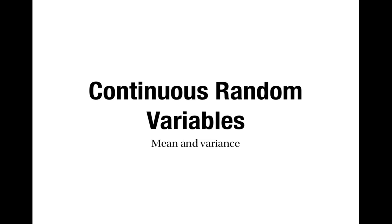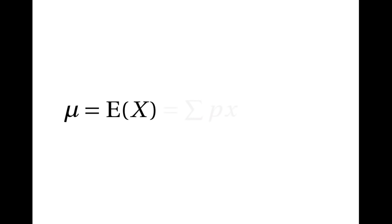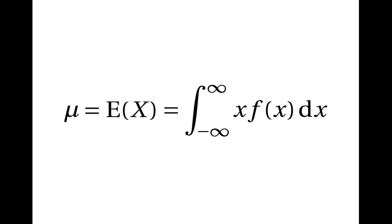This is a video about finding the mean and variance of a continuous random variable. The mean is the same as the expected value of the random variable. For a discrete random variable, that's equal to the sum of the probabilities times the possible values. For a continuous random variable, we replace the sum with an integral sign and the probabilities with the probability density function, so the mean is the integral of x·f(x) over all possible values of x.